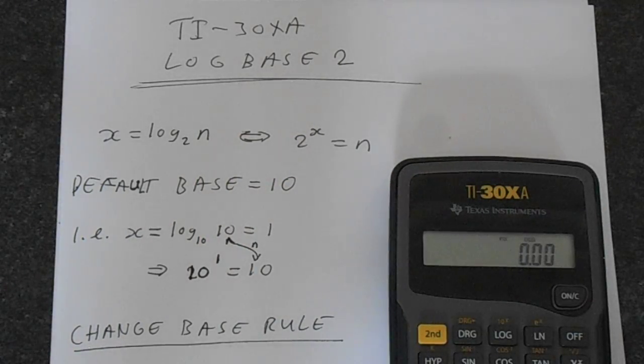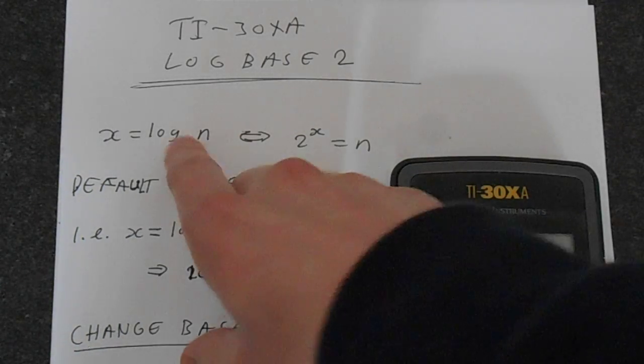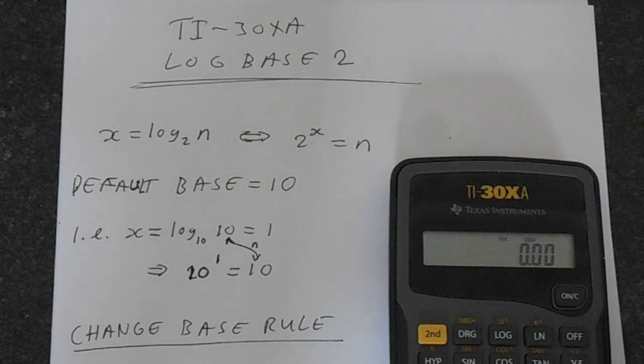By default, a calculator's base is 10, so this little number here is 10 by default. Unfortunately you can't change that default.